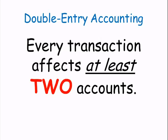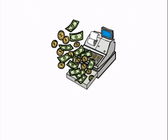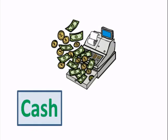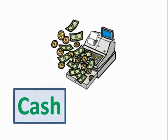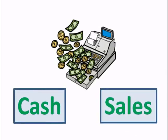Let's take an example of a store where a customer comes in and spends $100. It's easy to see that cash was received, but revenue was affected as well. At the end of the day, the store owner will want to know the store sales for the day, and would expect that the cash in the cash register would equal the sales for the day.